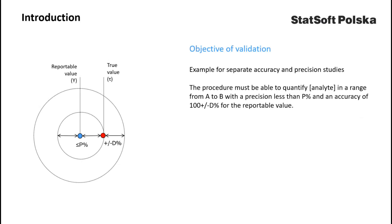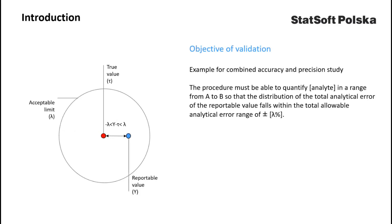In the case of separate accuracy and precision studies, the objective of validation may be defined as follows: the procedure must be able to quantify the analyte in a range from A to B with precision less than a predetermined limit and with accuracy within the predetermined range of the reportable value. In the case of a combined accuracy and precision study, the objective may be that the distribution of the total analytic error of the reportable value falls within the total allowable analytical error range.